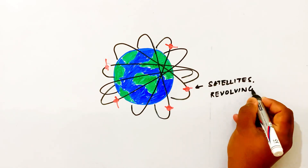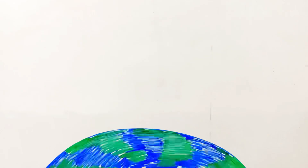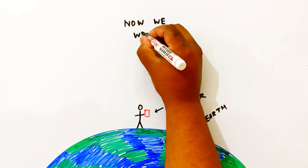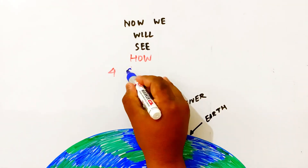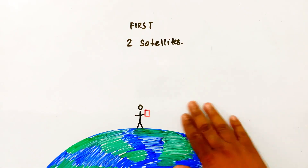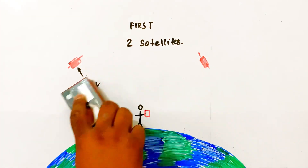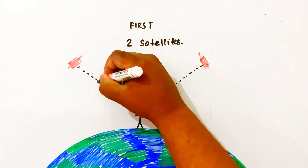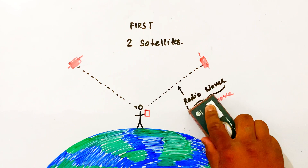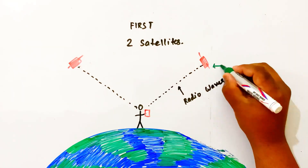We can see that the satellite revolves continuously. Every time, we have our receiver — our phone. We have satellite 1 and satellite 2. The signal sent is an EM wave, which is a radio wave. The distance is nothing but speed multiplied by time.